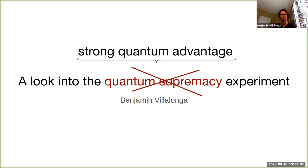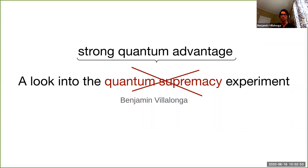Some people have suggested using the term 'quantum advantage,' but some refuse because that means something slightly different. By quantum supremacy — and this is the last time I'll say it — we mean solving a problem with a quantum computer that is fundamentally harder for the classical computer than the quantum computer; a problem outside of P and inside of BQP. Quantum advantage is a weaker requirement of just doing better than the classical computer, but not in this very fundamental and deep way. So from now on I'm going to use 'strong quantum advantage.'